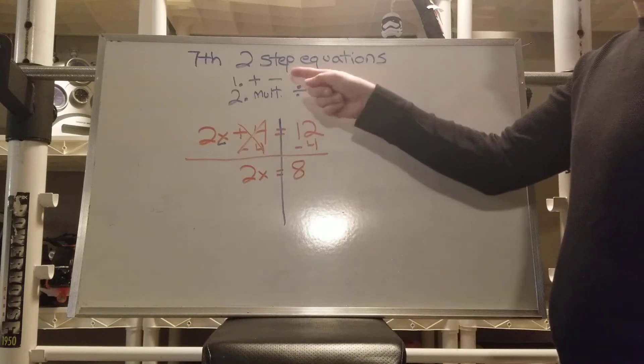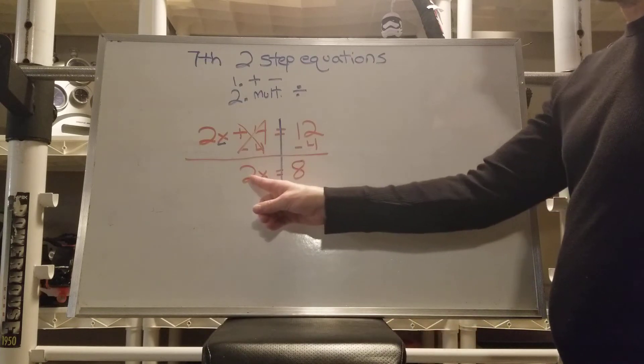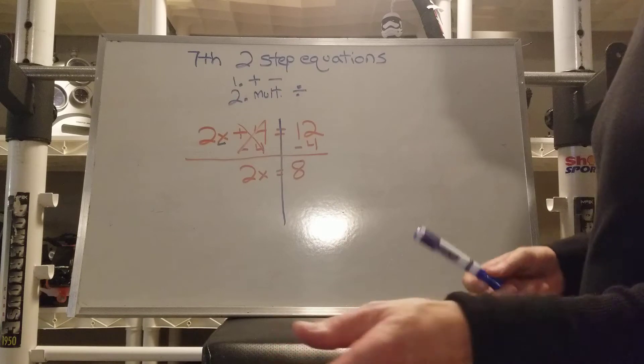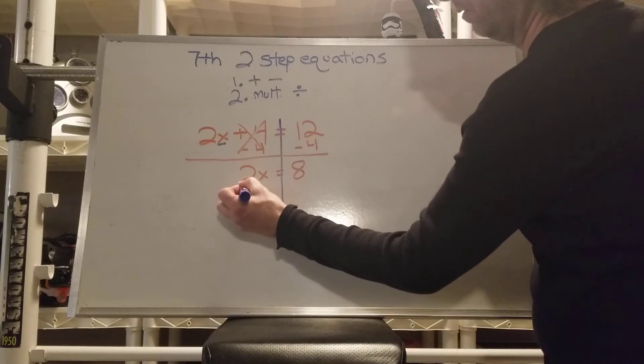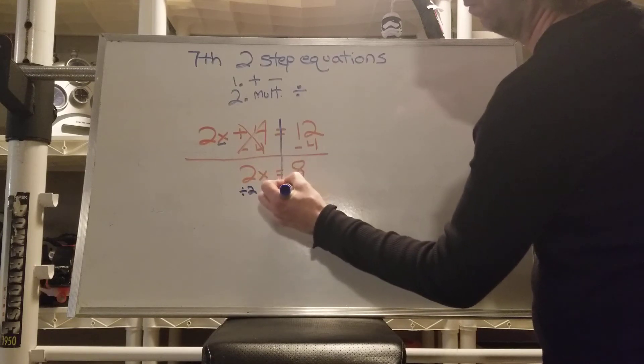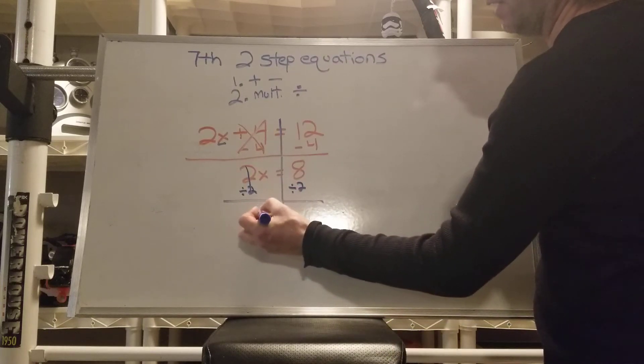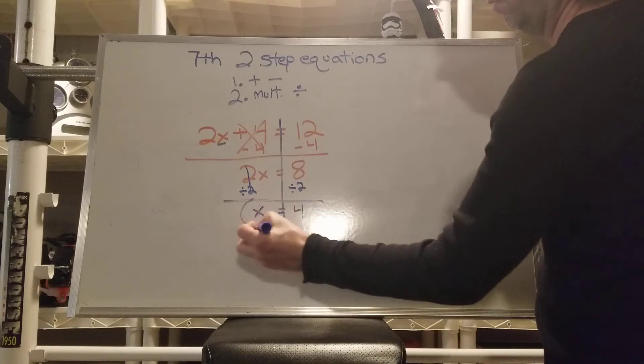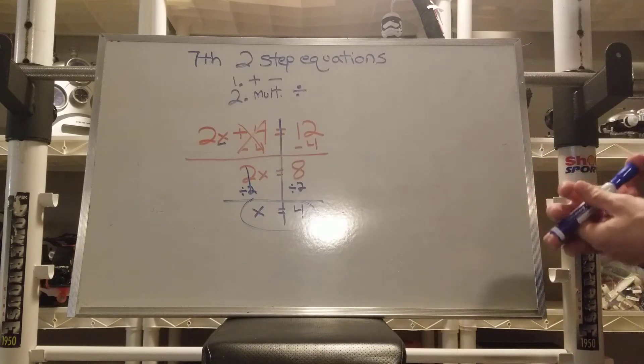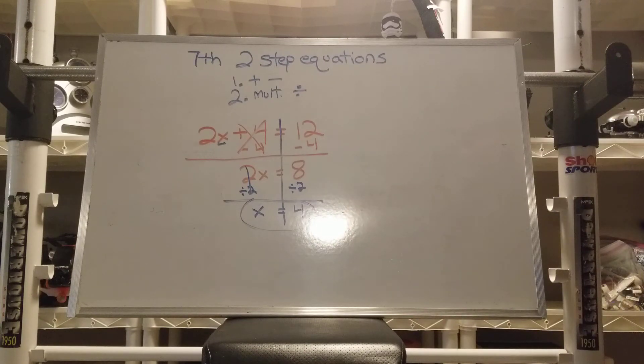So that was the first step, the adding and subtracting. Now we still have to get this x by itself. We have to get rid of this times 2. And what's the opposite of times 2? And I want you guys to start writing this below it like this. Divide by 2. We do it to one side, we have to do it to the other. So now our 2s cancel out. All I have left is x equals 4.